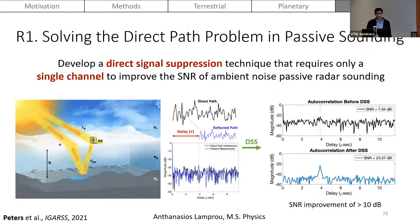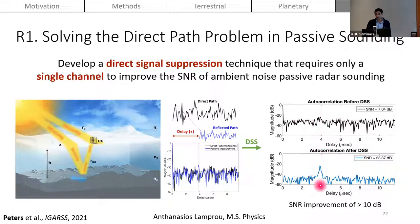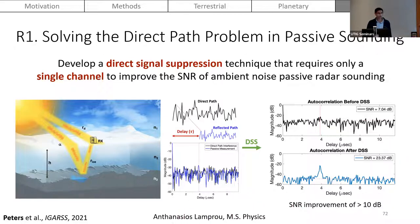Direct signal suppression is key because the direct path, in addition to RFI, is a strong source of interference for the passive measurement. The direct path is much greater than the reflective path, so the autocorrelation of both is roughly on the same order as the passive measurement itself. Before direct signal suppression, you have relatively low SNR; after applying it, you can improve the estimate of your echo peak in delay time and increase the extent of passive sounding spatial coverage for monitoring ice sheets. My student Antonio Slapru is working on optimizing this technique using different parameter search methods to isolate multiple returns from not just the bed reflection but internal layers as well.